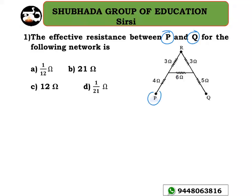Here is point P and here is point Q. We need to calculate the effective or equivalent resistance between points P and Q. If you look at the 3 ohm resistor and 3 ohm resistor, they are in series. So let me take R1 as their equivalent resistance — we need to add them.